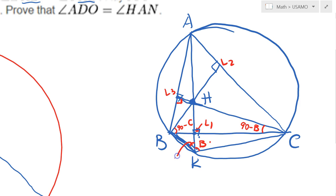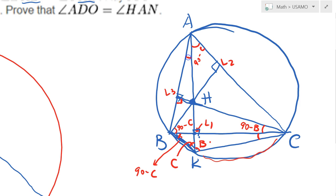In the same way, this angle comes out as C. Now look at angle L1BK: it subtends arc KC, which is also subtended by another angle. Focusing on triangle AL1C, that angle is 90 minus C. So angle L1BK is also 90 minus C. Similarly, the angle subtending arc BK, from triangle ABL1 which is a right triangle, gives 90 minus B.